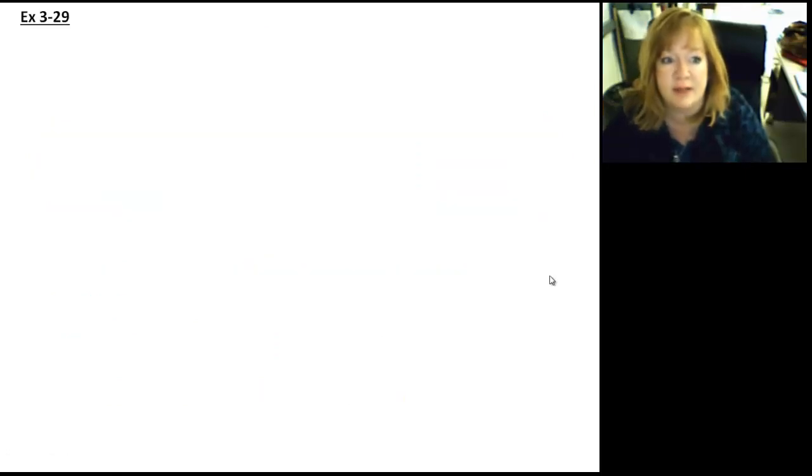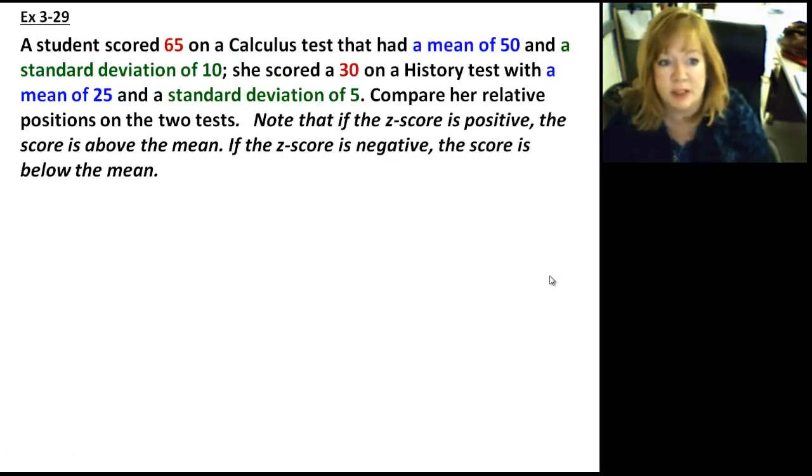Very easy to calculate. So let's do an example. A student scored 65 on a calculus test that had a mean of 50 and a standard deviation of 10. She scored 30 on a history test with a mean of 25 and a standard deviation of 5. Compare her relative positions on the test. This is what we're talking about. In other words, we're saying which class is she at higher standing in?